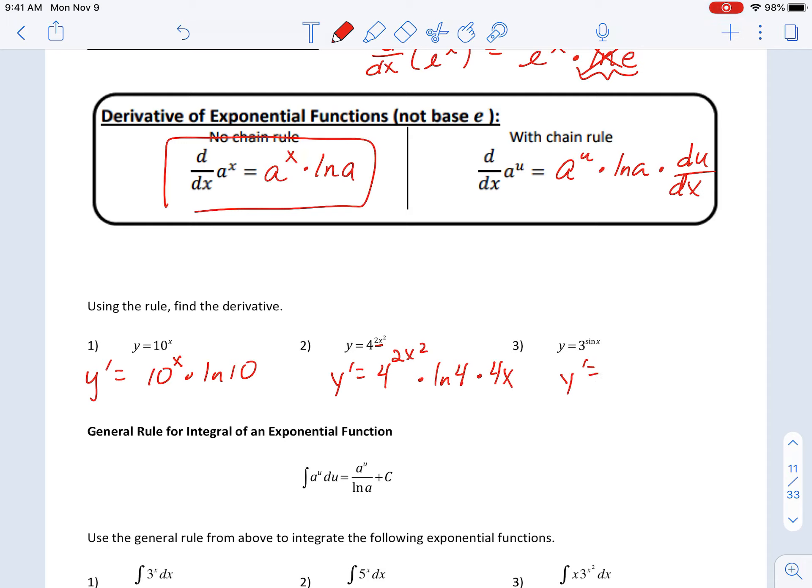Number 3, derivative of 3 to the sine of x is 3 sine of x times ln of 3 times chain rule. Derivative of the sine is cosine.